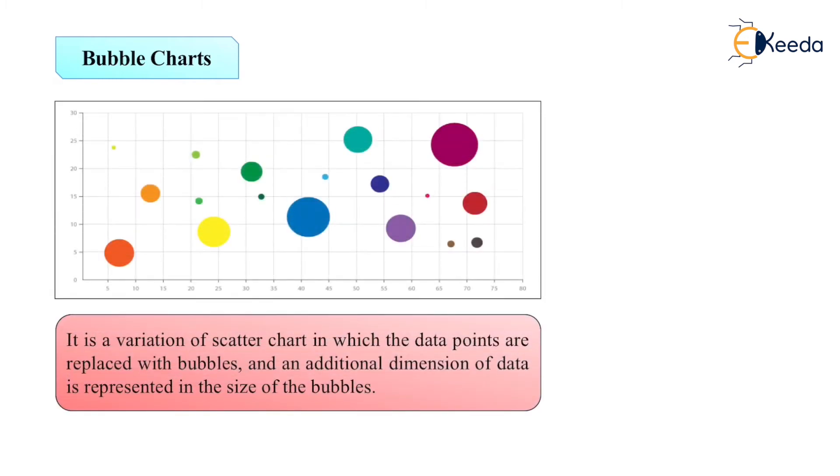Next is bubble chart. This is a bubble chart. It is a variation of a scatter chart in which the data points are replaced with bubbles. An individual dimension of data is represented in the size of the bubble. We can say this is having a higher amount of intensity than this one. We can represent on the basis of the size.